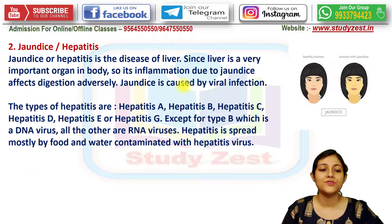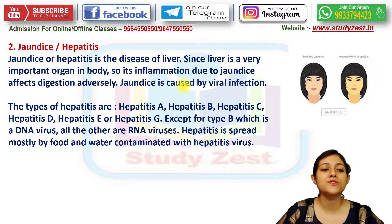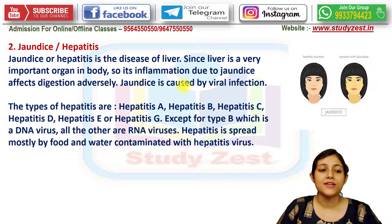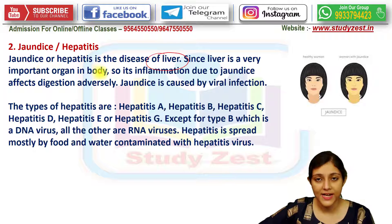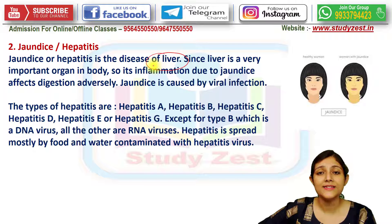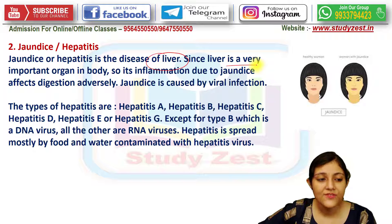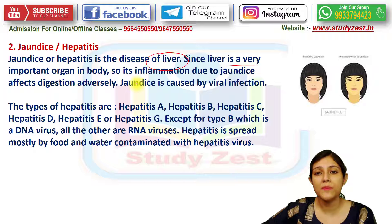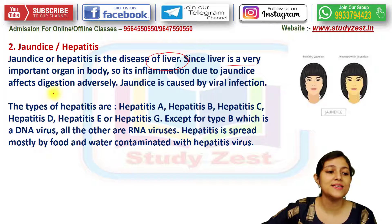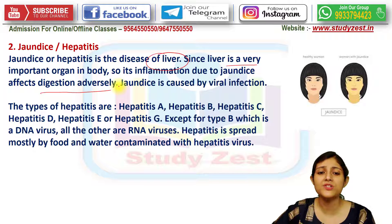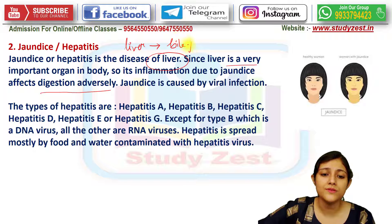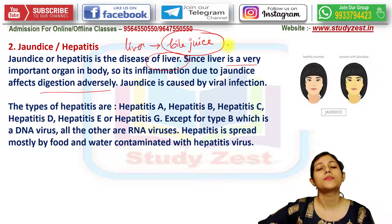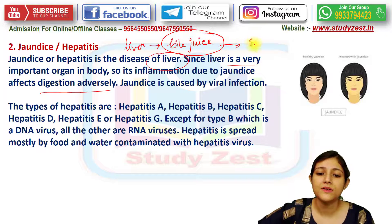Our first topic of discussion today is about jaundice or hepatitis. Jaundice is a disease of the liver. Since the liver is a very important organ in our body, its inflammation or swelling due to jaundice affects digestion adversely. The liver plays a very important role because it secretes bile juice, which is released in the small intestine.